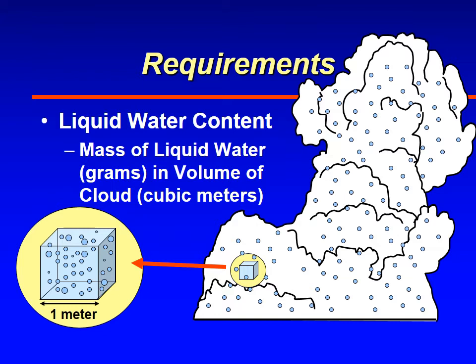Another way is by flying through cloud and trying to evaporate water droplets in front of a small heated probe. The amount of evaporation that occurs and the amount of energy required to keep that probe at the same temperature determines the liquid water content. So that's how we measure liquid water content.